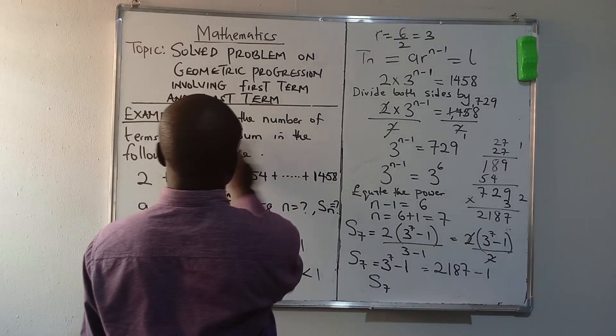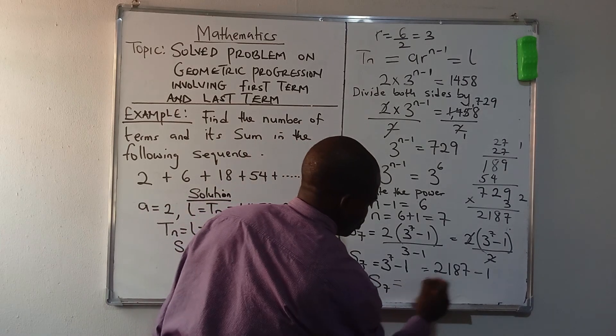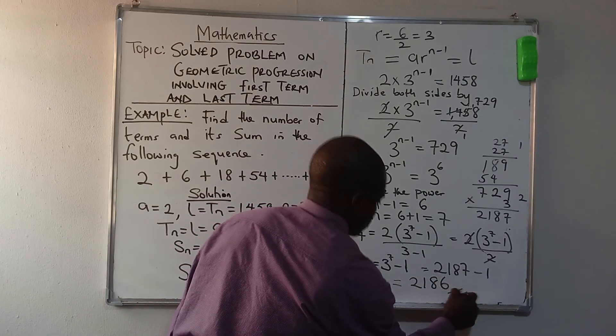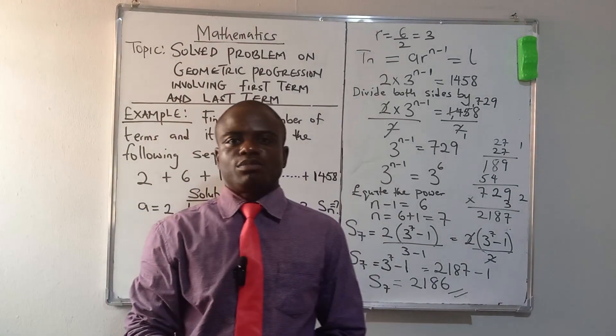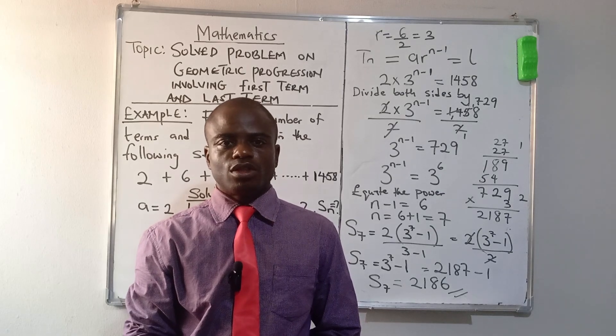So we have found the number of terms and the sum in the following sequence, which gives us 2186. This is the end of our class. Please subscribe to my channel so that you can have access to the latest videos. Have a wonderful day.